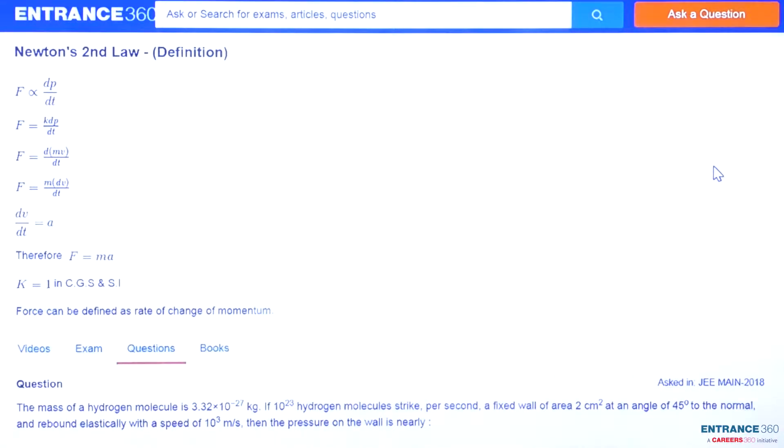The question says 10^23 hydrogen molecules strike on a wall at 45 degrees to the normal and rebound elastically with velocity 10^3 meters per second. You have to find the pressure on the wall.